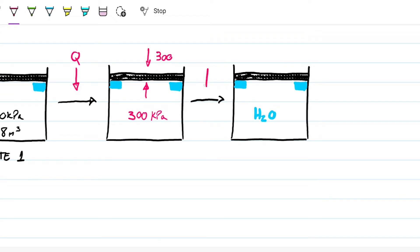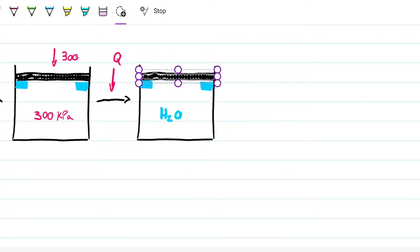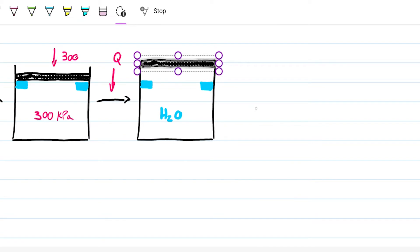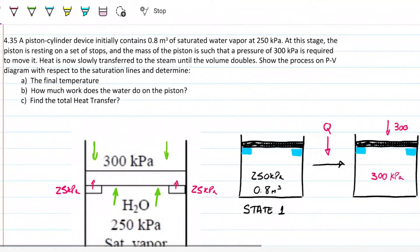As heat continues to be added at this quasi-equilibrium, the volume increases. We expect it to double, reaching 1.6 meters cubed. Because this happens in quasi-equilibrium, the pressure remains constant at 300 kilopascals throughout this expansion phase.